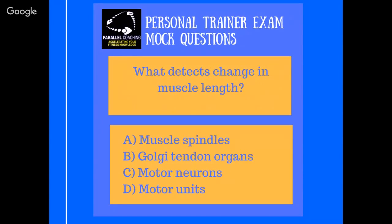Final question: what detects change in muscle length? Is it A, muscle spindles? B, Golgi tendon organs? C, motor neurons? Or D, motor units? Take your time on this — pause if you need to. The answer is muscle spindles. There are lots of proprioceptors in our body. Their job is to check in with our body and find out what is happening — this muscle is too long, it's too stretched out, this muscle is too tight. It then sends a signal back via sensory neurons into our central nervous system and back out via motor neurons to create action to change that.